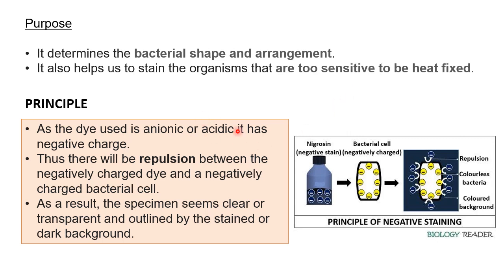Now what is the principle? Nigrosin, also known as India ink, is a negative stain. It has a negative charge, and the bacterial cell wall is also negatively charged. So the negative and negative charges will repel, which is why bacterial cells will not take up the nigrosin dye and the background is what gets colored. As the dye is anionic or acidic, there is repulsion between the negatively charged dye and the negatively charged bacterial cell. As a result, the specimen appears clear or transparent and is outlined by the dark stained background.